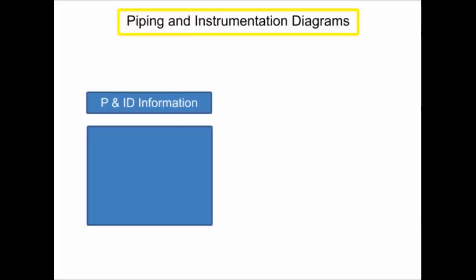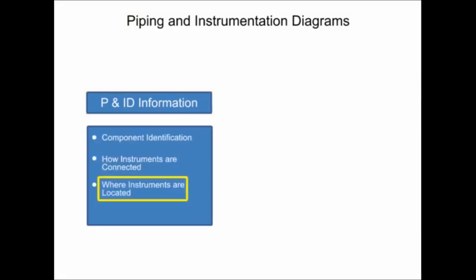Piping and instrumentation diagrams provide information that includes component identification, how instruments are connected, where instruments are located, and their function within a process.